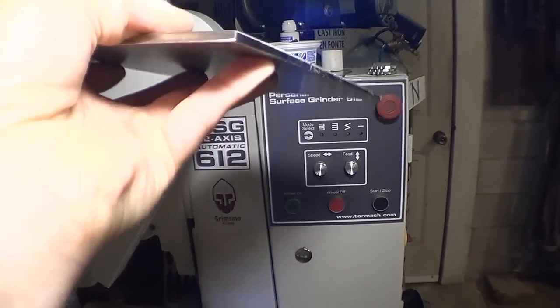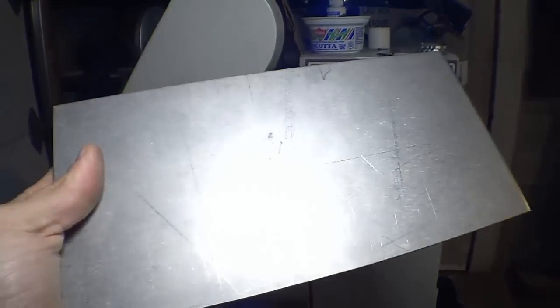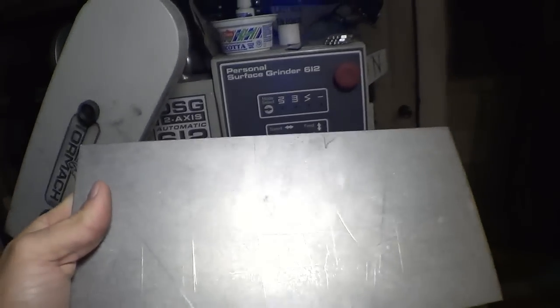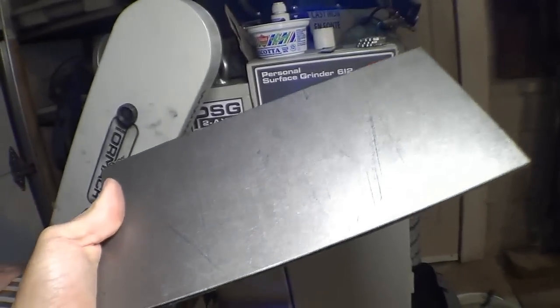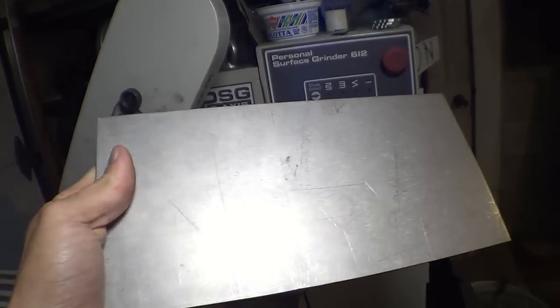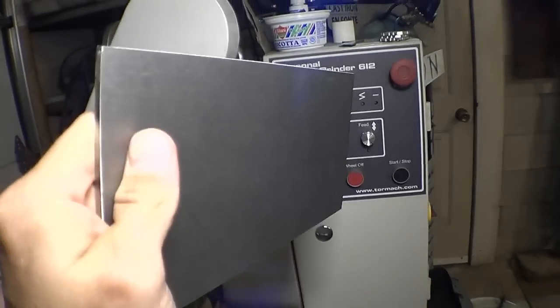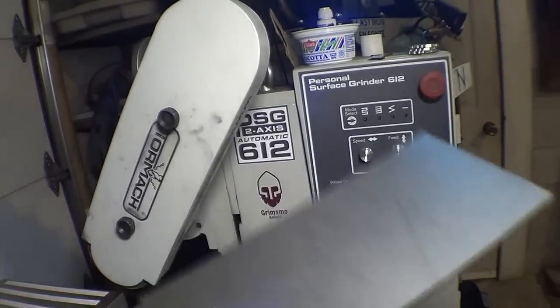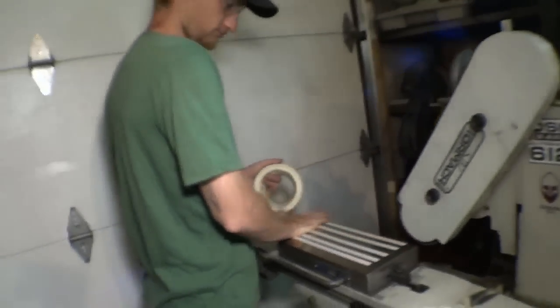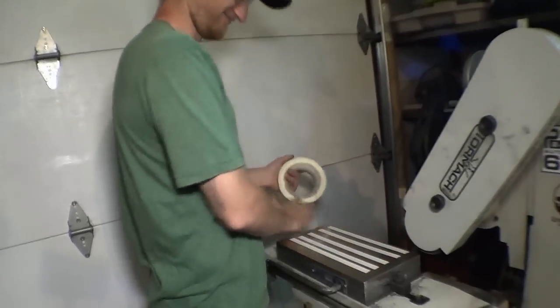So we're going to surface grind one side because this is going to be, I think, 24 pocket clips. I want the top side of the pocket clips to be super pretty and flat and accurate, and then when I machine the backside it'll sit flat on the table. So here my bro Eric is using 3M VHB.